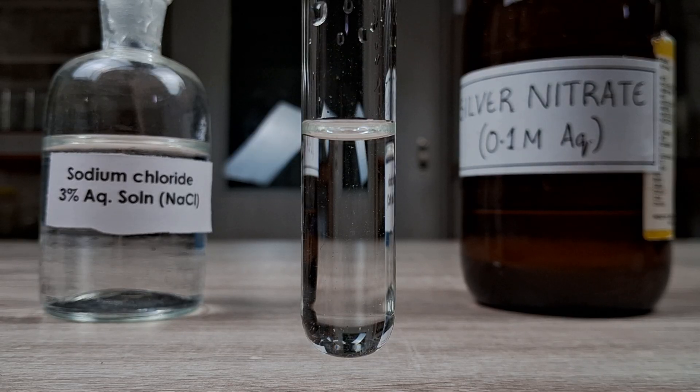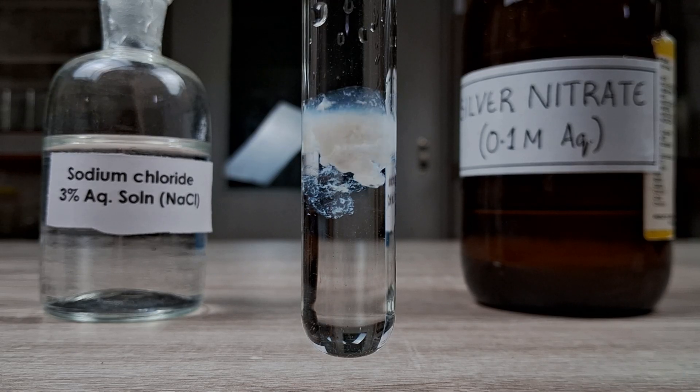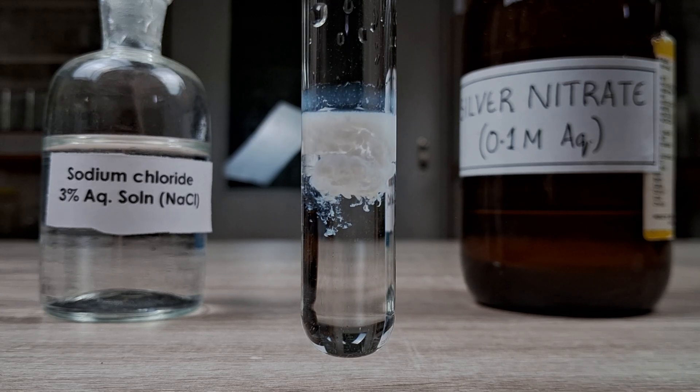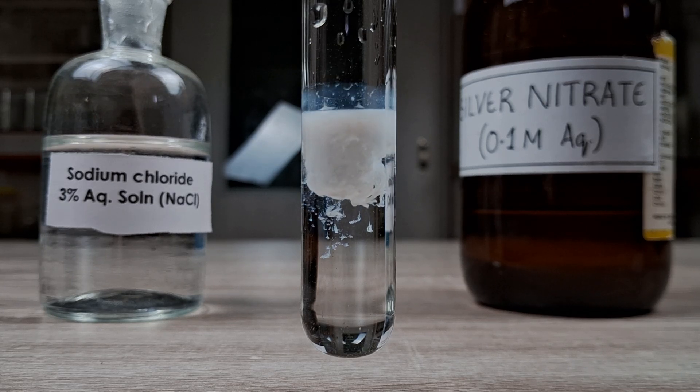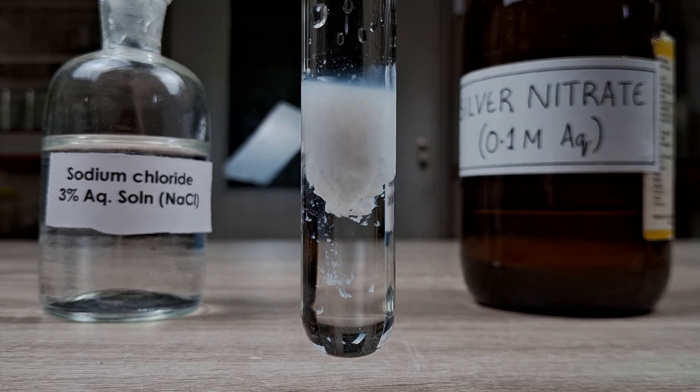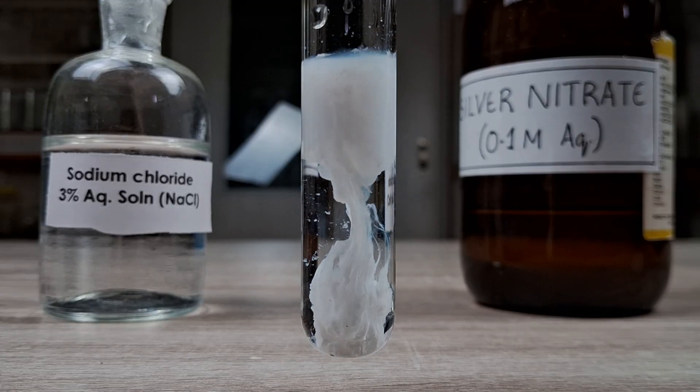Observe what happens. As you mix the two solutions in the test tube, an insoluble white precipitate of silver chloride forms. More of the precipitate forms as you continue adding the solution dropwise. Since silver chloride is a heavy metal salt, the precipitate may even settle to the bottom as more of it is formed.